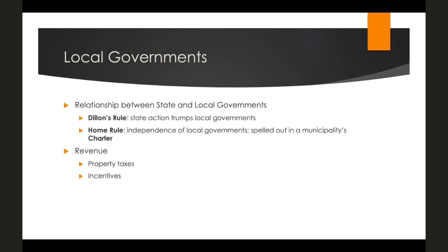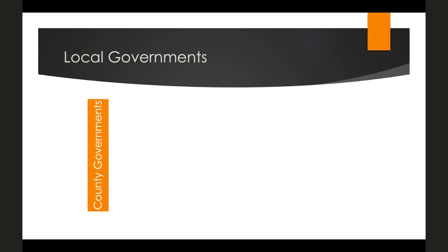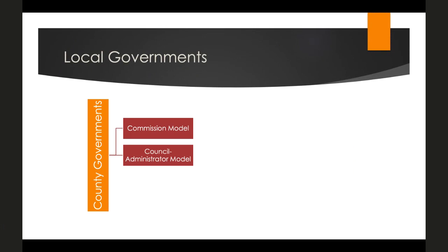Local governments face competing demands: to keep property and sales taxes low to incentivize people to build businesses and homes, while also meeting growing demand for government services — schools, roads, parks, community centers — as their population grows. For county government structure, there are a few models. The first is a commission model, where an elected commission exercises all executive and legislative power at the county level. The second is a council-administrator model, with an elected council handling legislative authority and an appointed county administrator executing county ordinances.